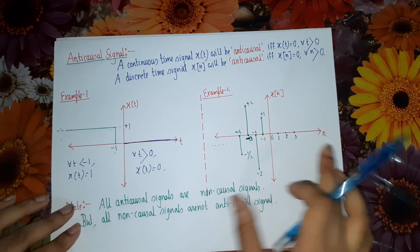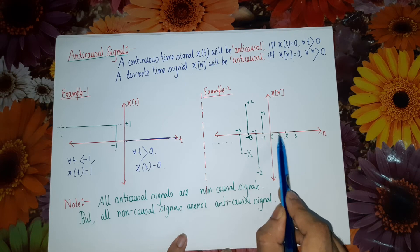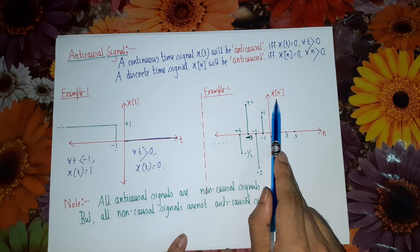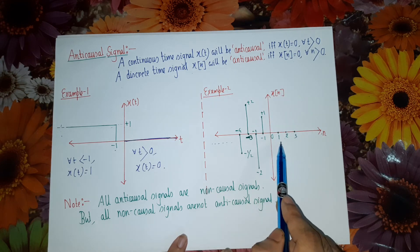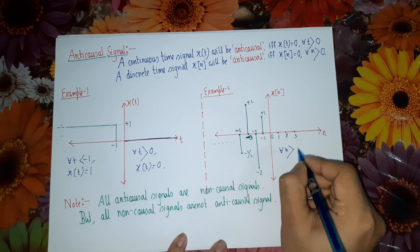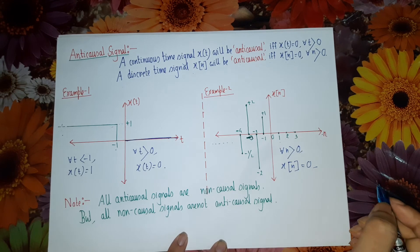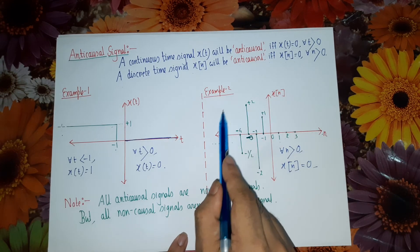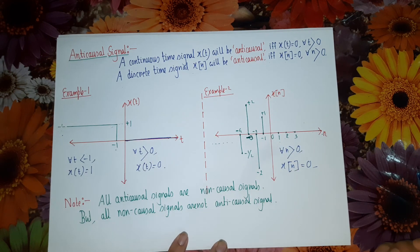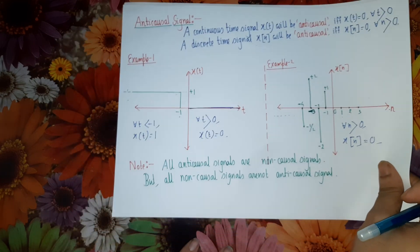Let us look at the discrete time signal example. You observe that for n greater than 0 — that is 1, 2, 3, 4, 5, up to n equal to infinity — the amplitude of the signal is constant at 0. The complete waveform of the signal lies in the negative time axis, and no portion of the waveform lies in the positive time axis. Hence, clearly this is an example of an anti-causal signal.